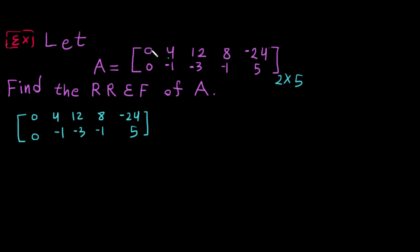First we have to search for the leading one. We begin from the first entry, then go right until you find one. Here the first entry is 4, so we have to change it to 1. You can do it in two ways, but I want to do it in one step — divide the whole row by 4, since 4 is the greatest common factor of that row.